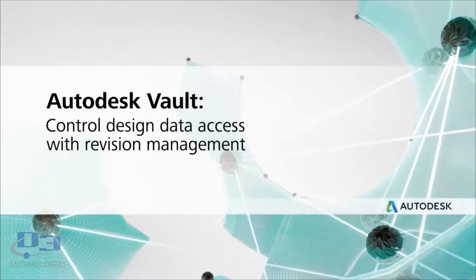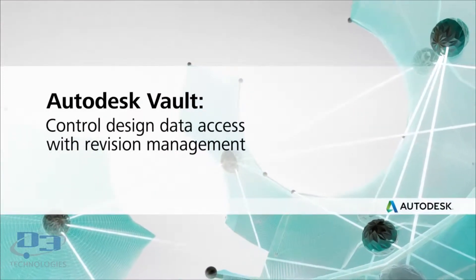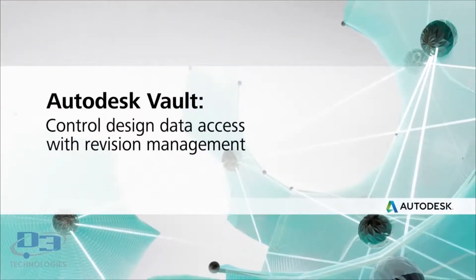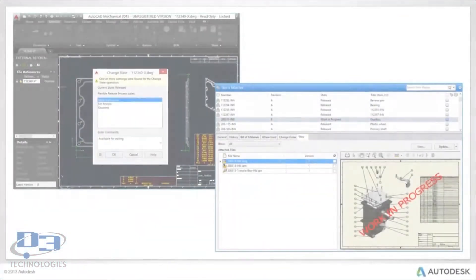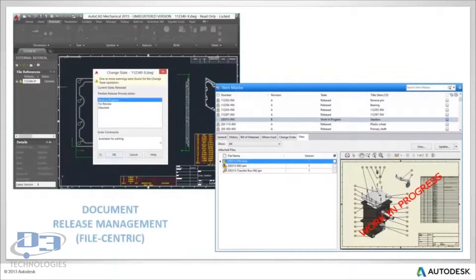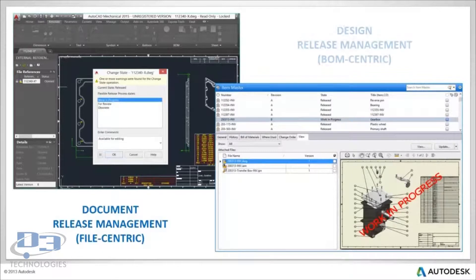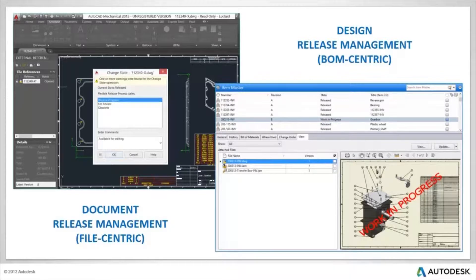Autodesk Vault controls design data access with revision management. Vault provides two methods that can be used to audit and track revision history of your data from a single location. Both methods reduce the chance of design and manufacturing errors by releasing and tracking files throughout the design cycle, ensuring team members access only the correct revision of the data at the appropriate time.